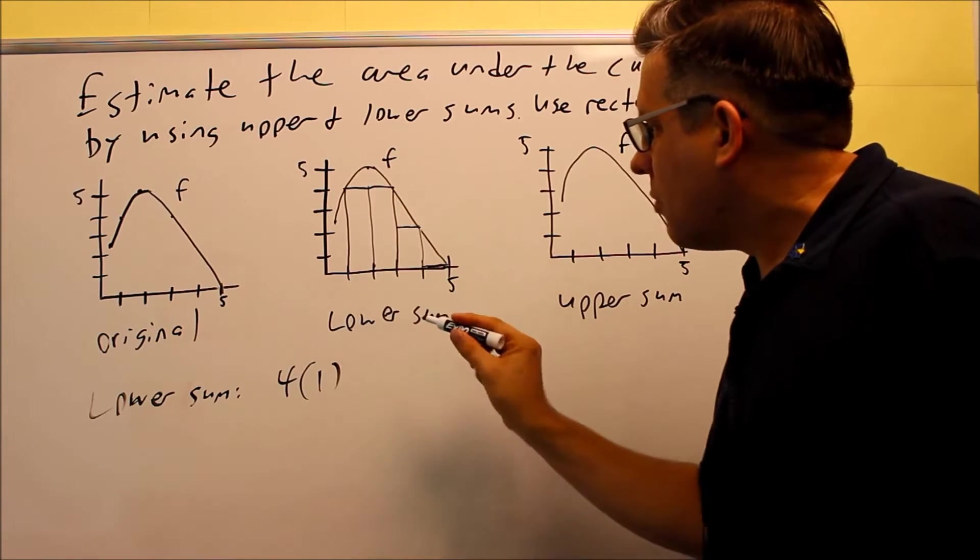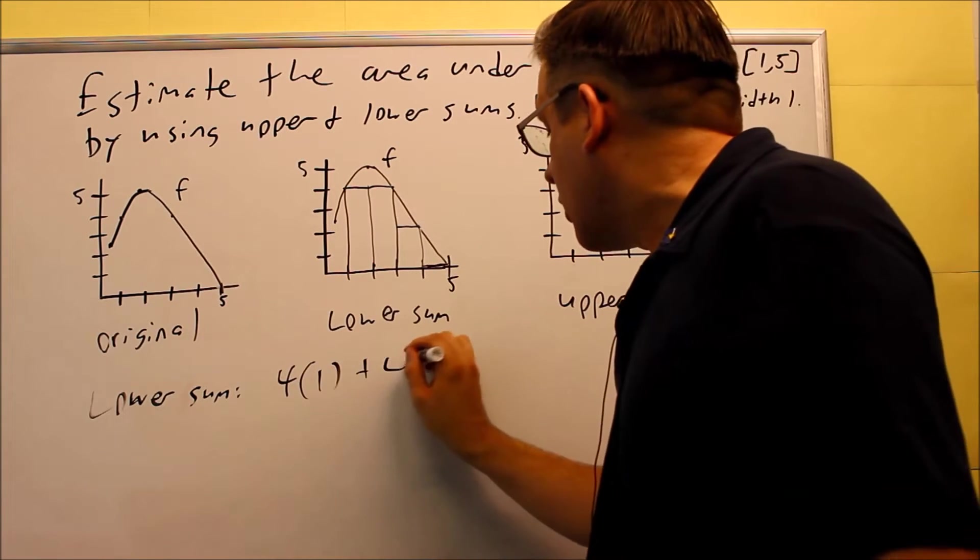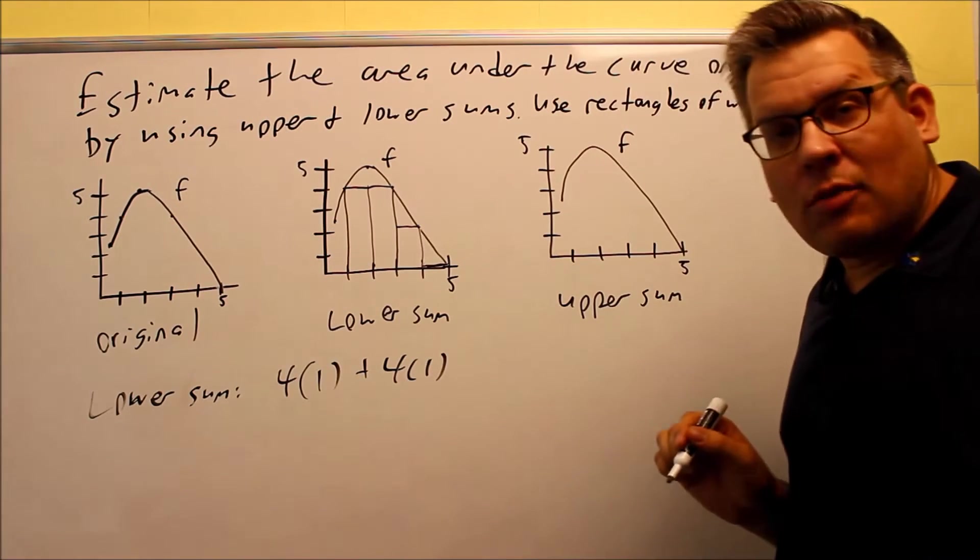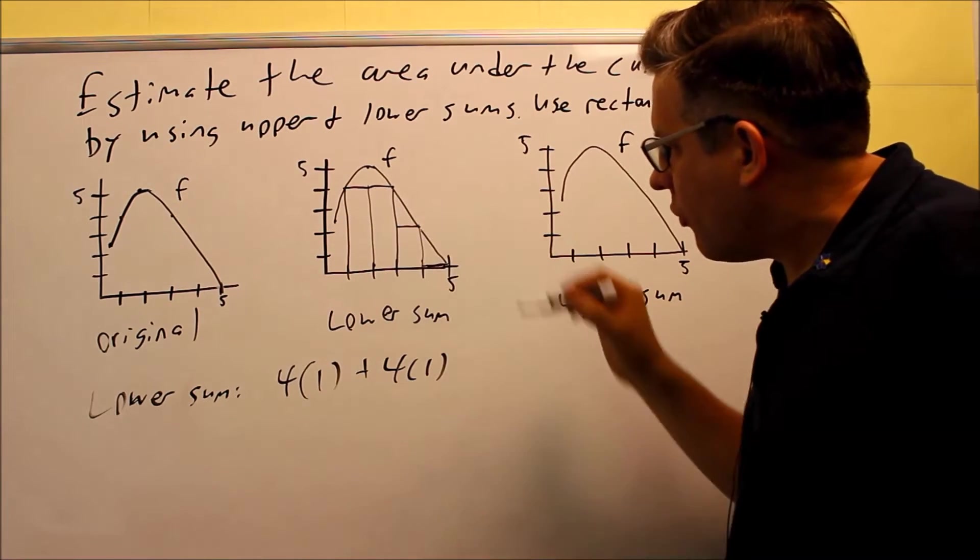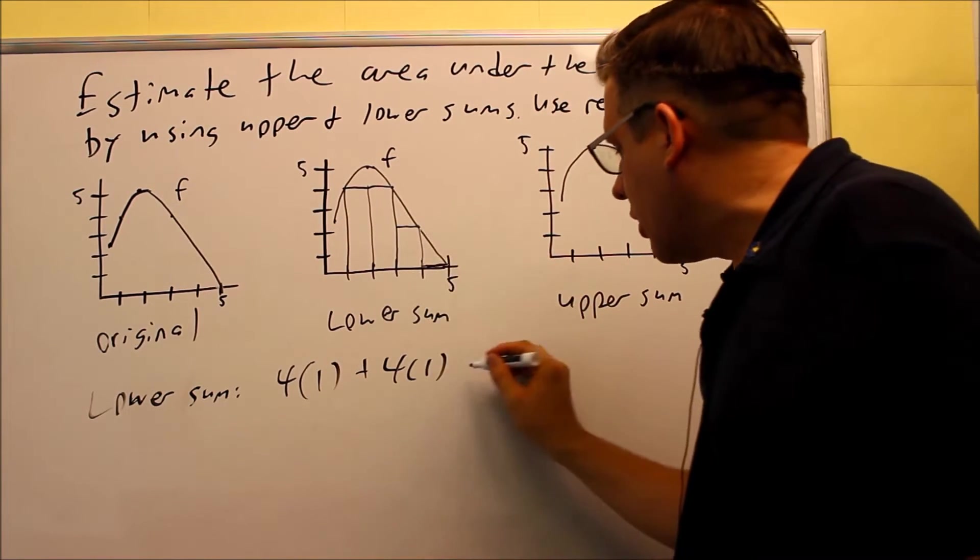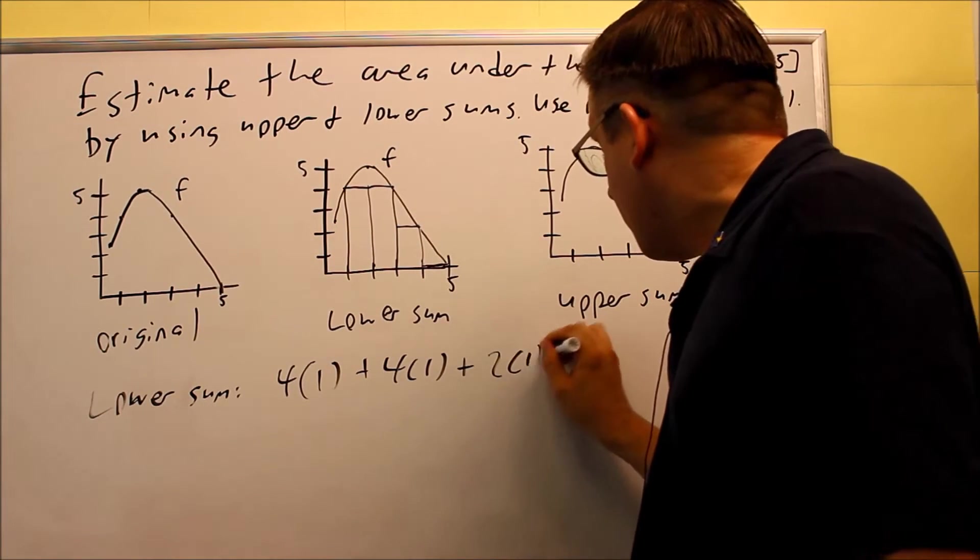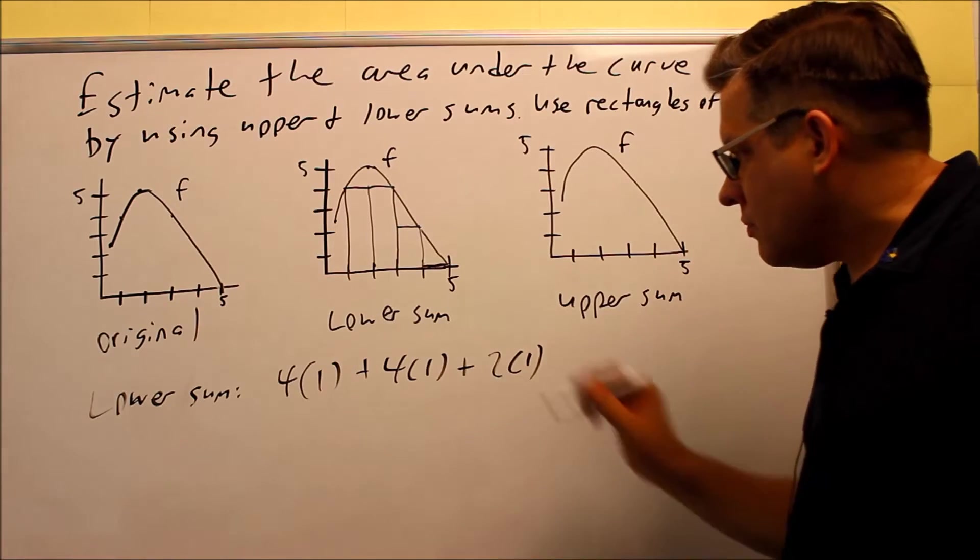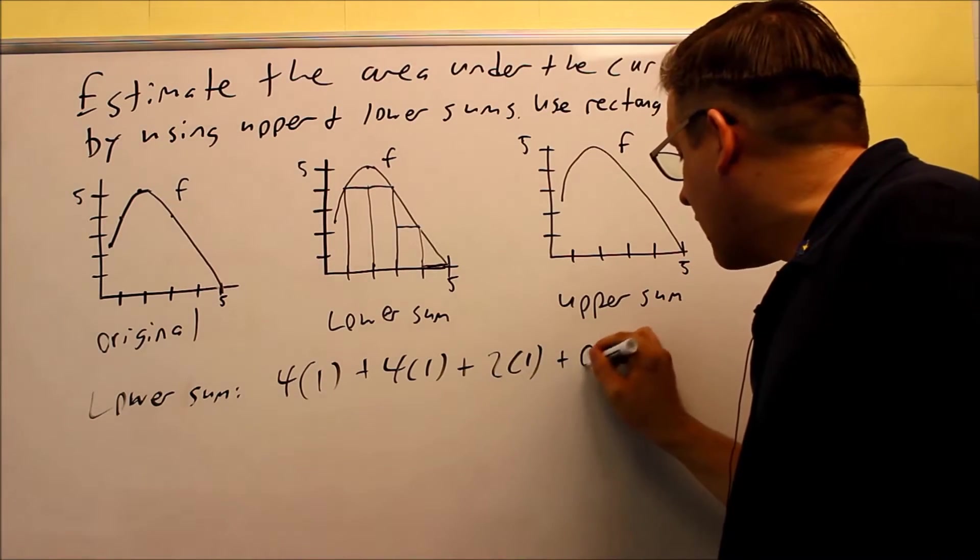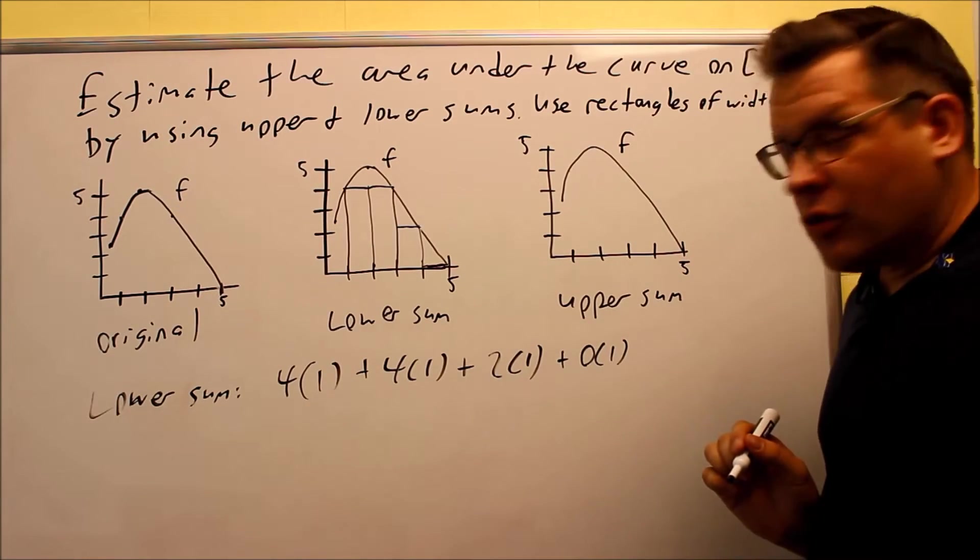That's the area of the first strip. The second one, you're going to have another 4 times 1, height of 4, and a width of 1. This one here has a height of 2, and a width of 1. And the last one has a height of 0, and a width of 1.